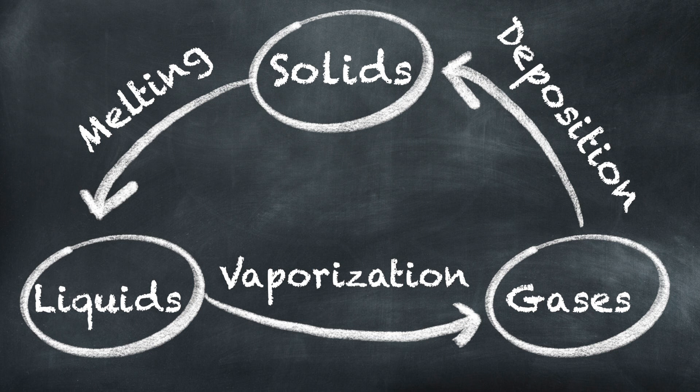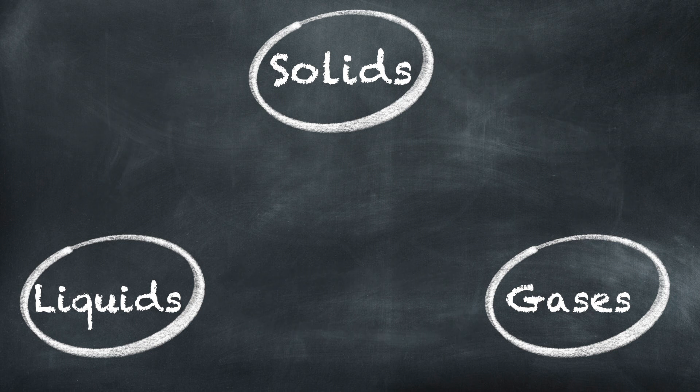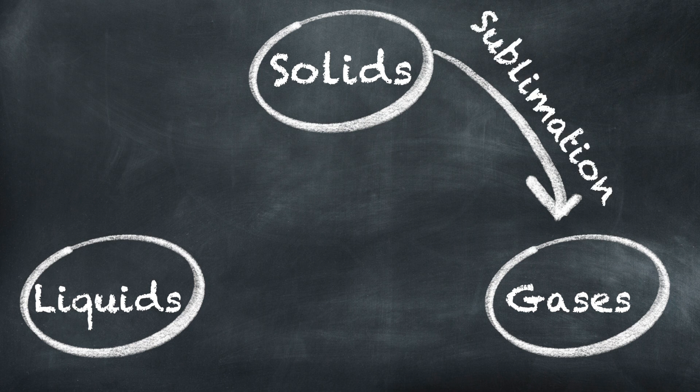So now we've gone one way around the phase change cycle — let's go back around. Now we're back up at our solids. Let's go solids to gases. If I take a solid, for instance dry ice — you have a solid cube of dry ice and it starts turning into a vapor in front of you — that is going to be called sublimation. When we go from a solid to a gas, that's sublimation; we go from something with a really tight molecular structure to something that's super loose and free moving.